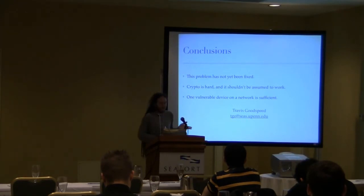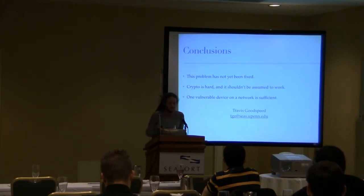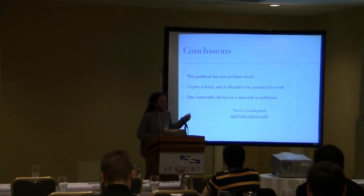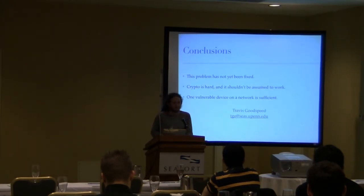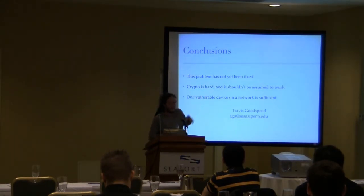To conclude, this hasn't yet been fixed. The replacement of the vulnerable code is going to take several years, and by that point the Zigbee Smart Energy profile itself might fade away. Crypto is hard and it shouldn't be assumed to be done properly just because it's complicated. A single vulnerable device in the network breaks the promises offered by certificates in the same way that a single rogue certificate authority breaks the host side of things in SSL, because here the individual devices rather than just servers in the sky are being authenticated.